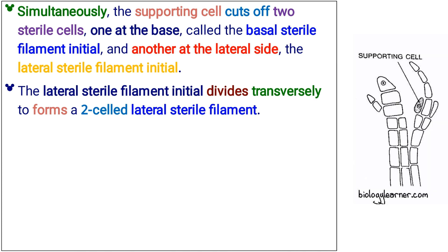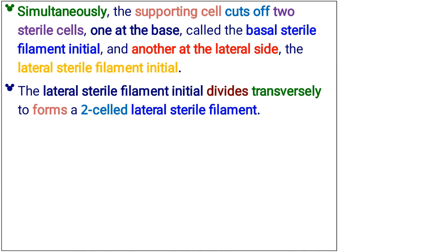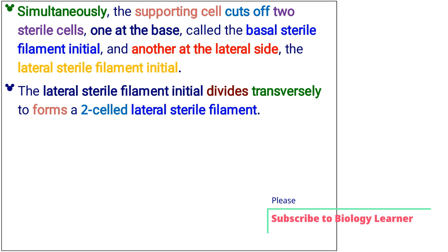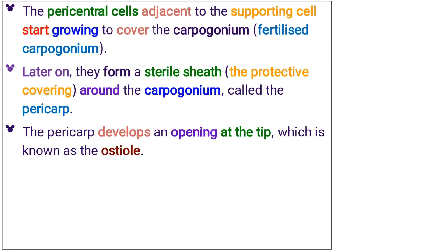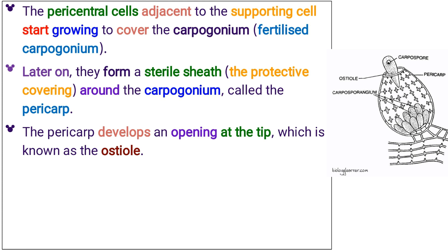Simultaneously, the supporting cell cuts off two sterile cells: one at the base, called the basal sterile filament initial, and another at the lateral side, the lateral sterile filament initial. The lateral sterile filament initial divides transversely to form a two-celled lateral sterile filament. The pericentral cells adjacent to the supporting cell start growing to cover the fertilized carpogonium. Later on, they form a sterile sheath, or protective covering, around the carpogonium, called the pericarp. The pericarp develops an opening at the tip, known as the ostiole.